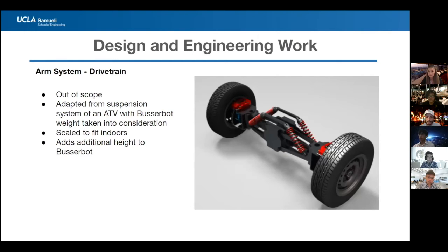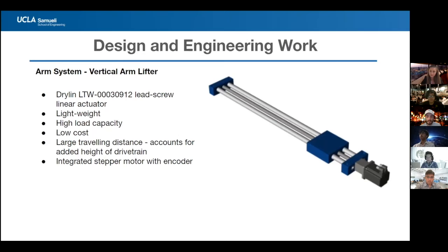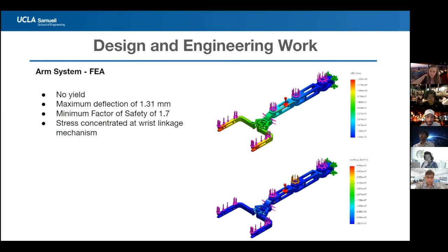Although the suspension system is outside our scope, it was included for concept completeness — adapted from an ATV design and scaled to fit within the average door width. A lead screw linear actuator was chosen to lift and lower the robotic arm, with a 1-meter travel span, and comes with an integrated stepper motor and encoder. SolidWorks simulations showed the arm does not yield under 10-pound loads, with a maximum deflection of 1.31 mm and a factor of safety of 1.7. The main stress concentration lies on the wrist linkage mechanism used for grasping and ungrasping trays.